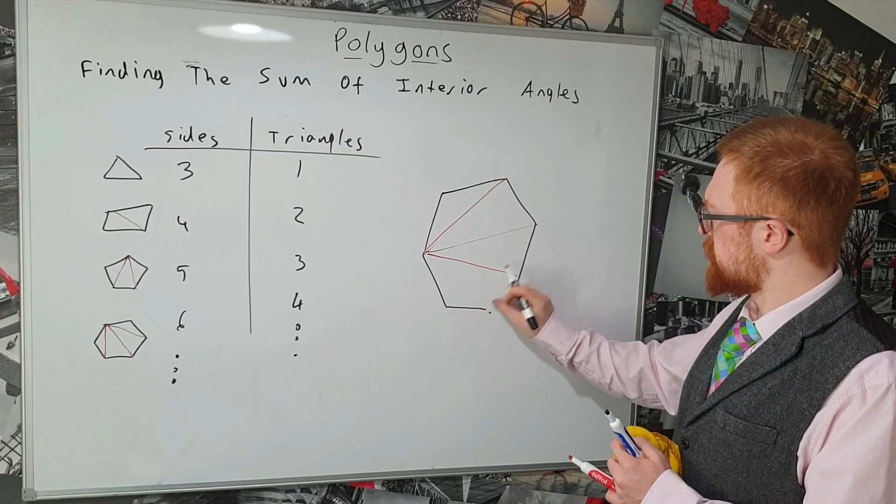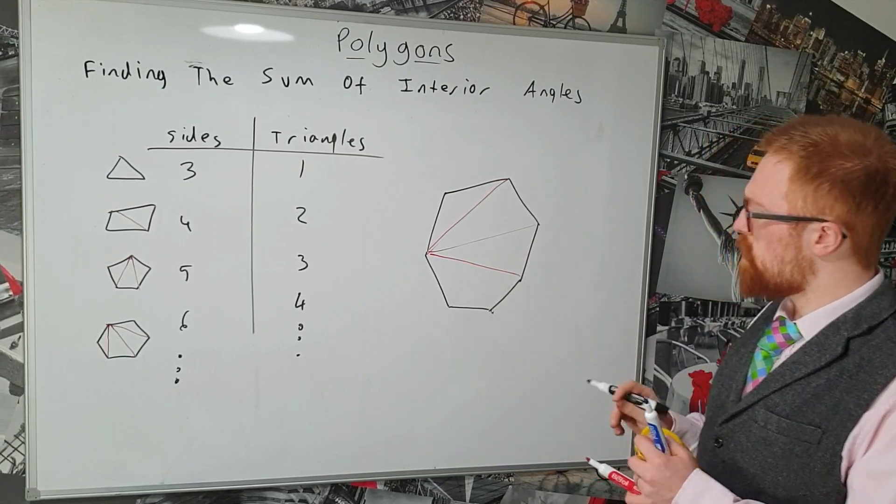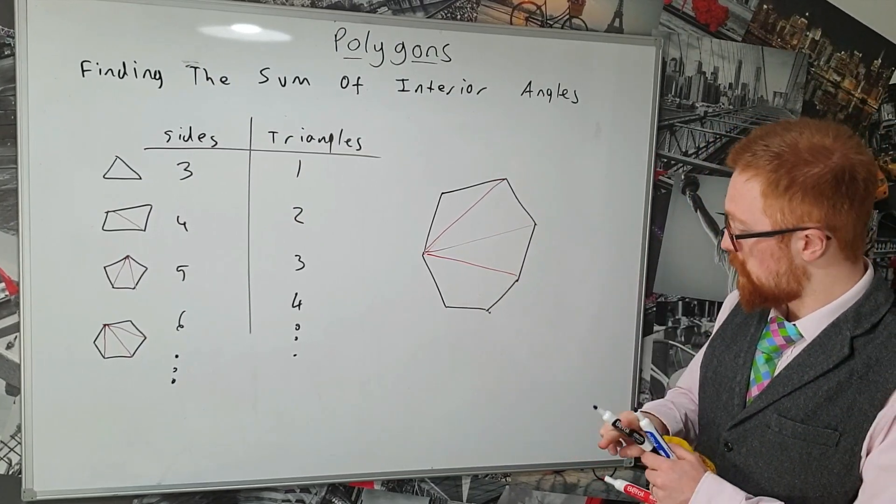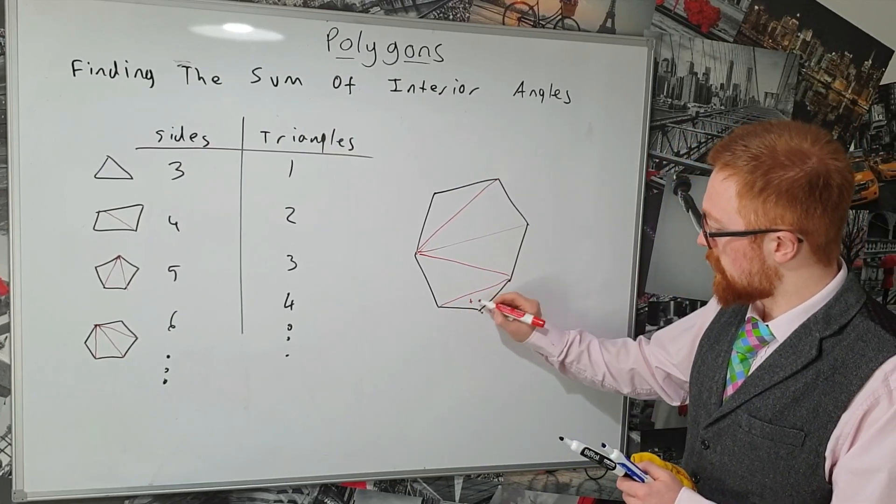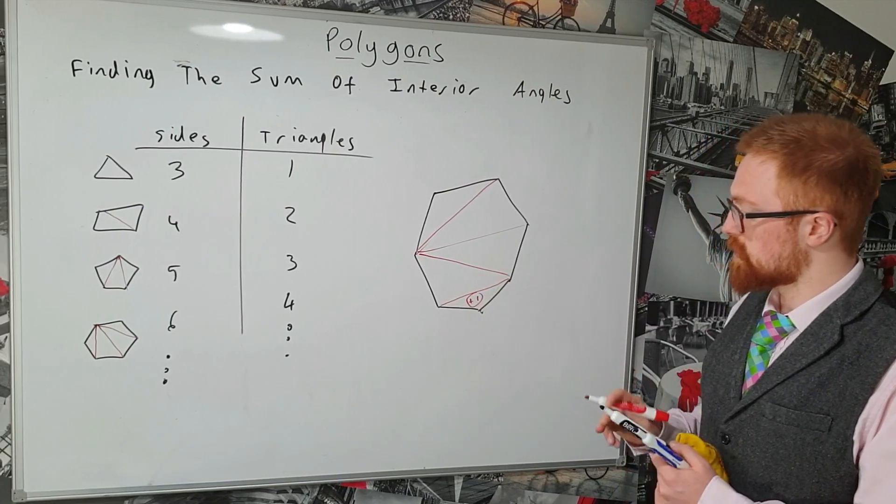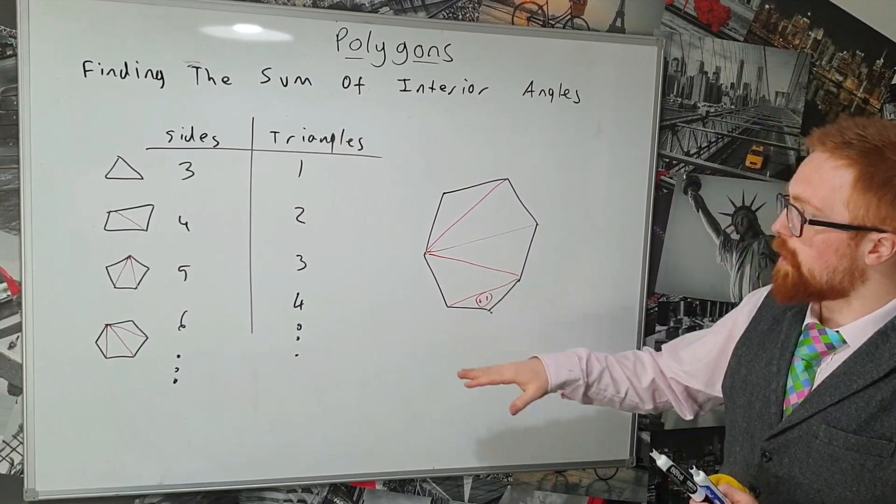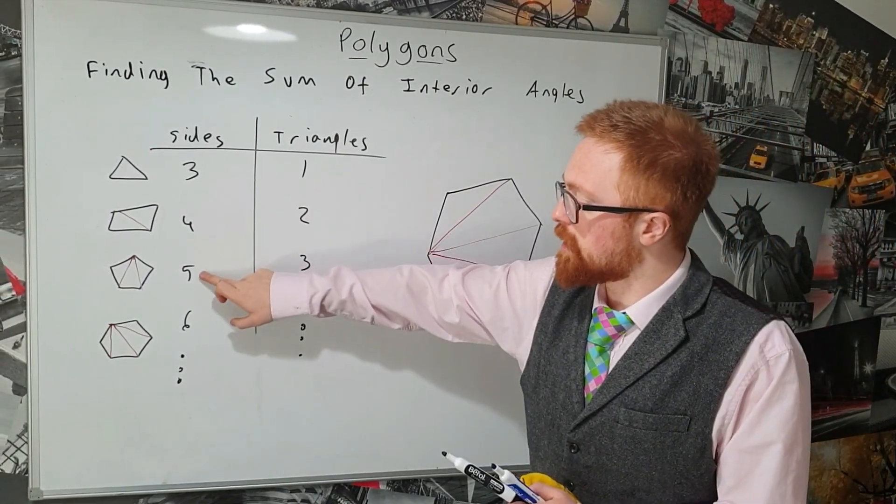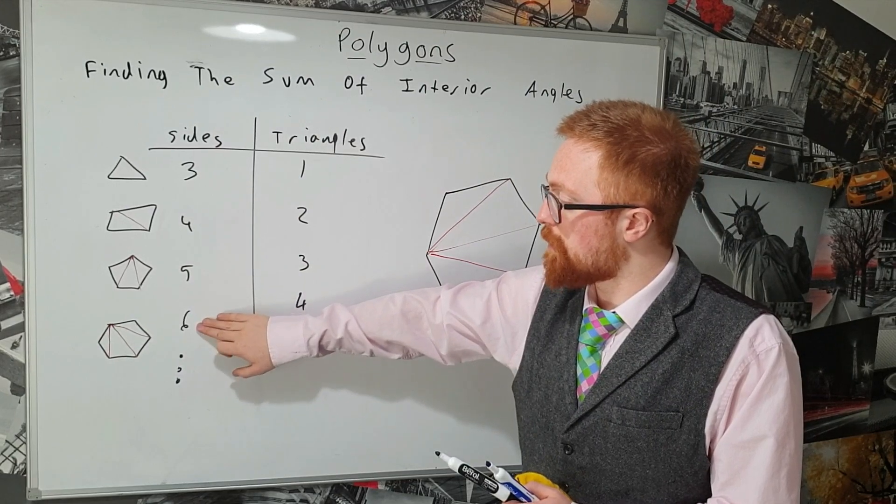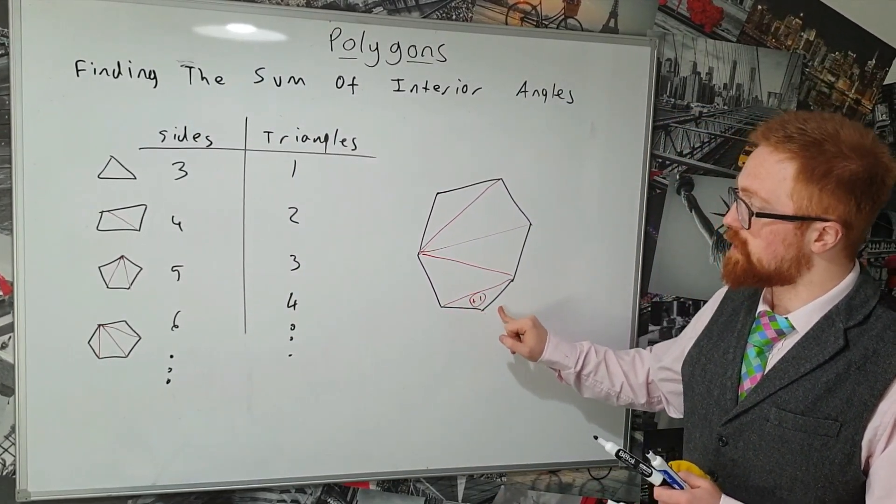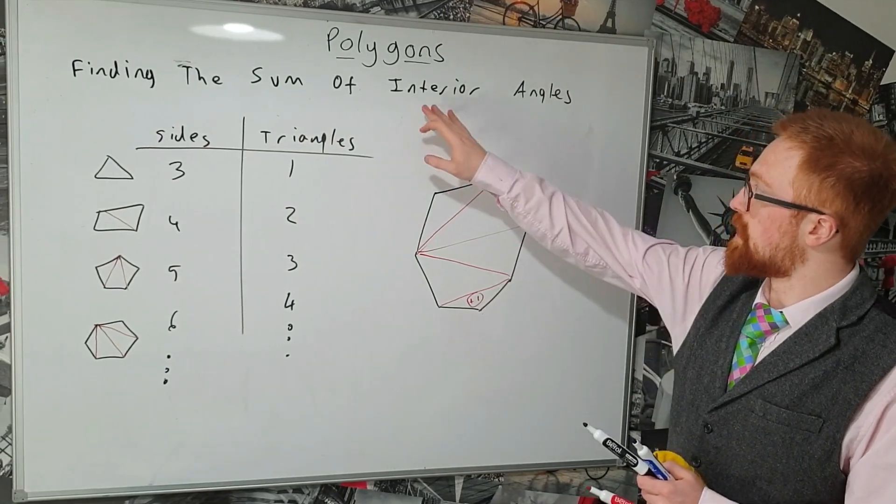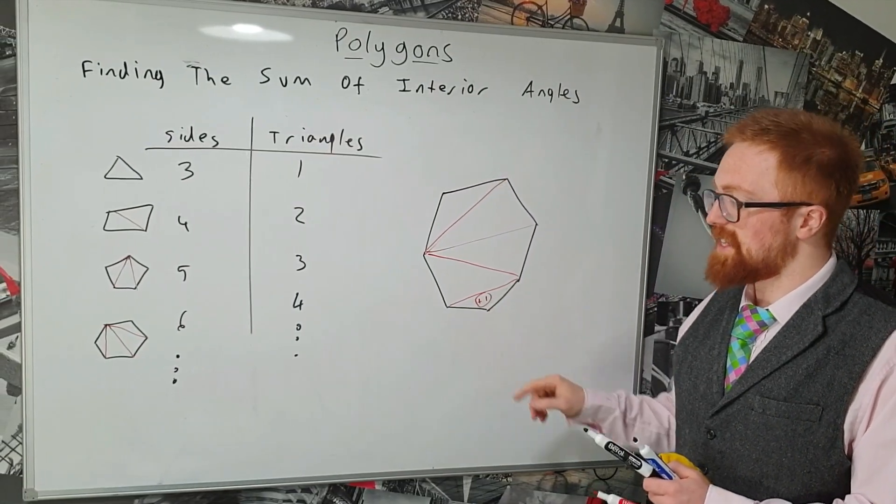Now what this allows us to do is we can always then split our new shape along the line we've just rubbed out, in essence always adding this one extra triangle. So whenever we increase the number of sides of our polygon by one, what we're essentially doing is adding on a triangle which is going to increase the sum of the interior angles by 180 degrees.